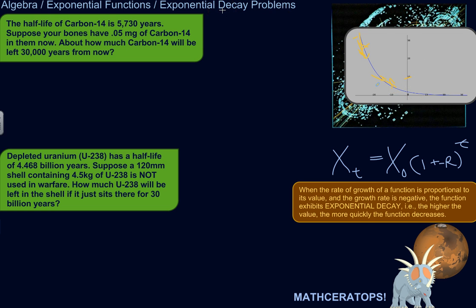So I've got a couple examples here that have to do with isotopes. This is radioactive decay. For example, the half-life of carbon-14, that's an isotope of carbon, is 5,730 years. So what does half-life mean?